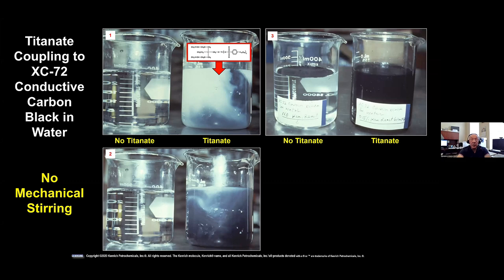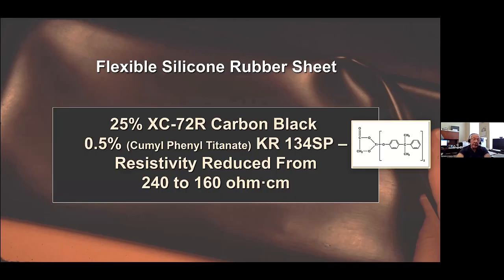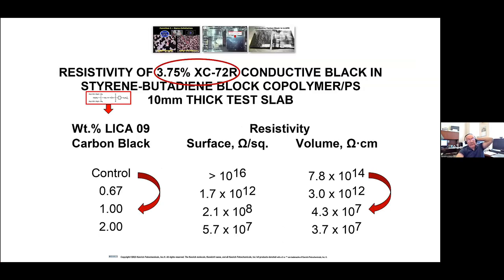Once you've got that carbon black treated, it goes into polyolefins and the conductivity is much more improved. In silicone, we saw the resistivity reduce from 240 to 160 ohm·cm on volume. In SBR, we took 3.75% of the carbon black and treated it with different amounts of the Lyco-9. With just 1% by weight of the carbon black, we were able to go from 10^14 down to 10^7 on the resistivity — a very significant improvement in conductivity — because you're exfoliating the conductive carbon black, breaking up the deagglomerated nanoparticles and causing more three-dimensional contact through the polymer phase. Notice between 1% and 2% you get no more conductance because you've deagglomerated that block as much as possible.